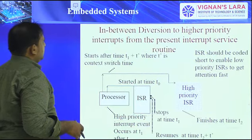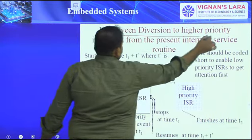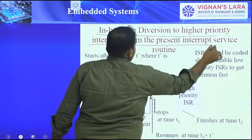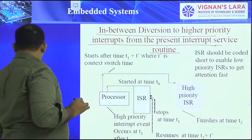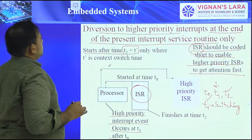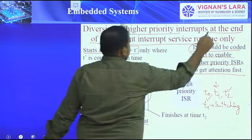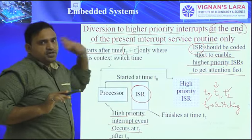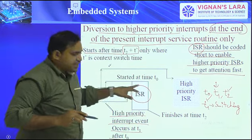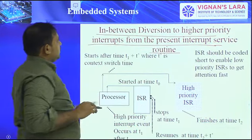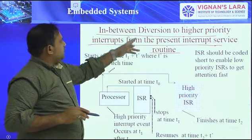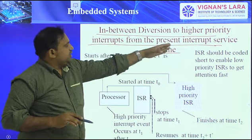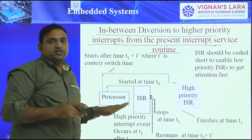The second figure shows diversion to higher priority interrupts from within the present interrupt service routine — not waiting until the end. Here, at T0 the process starts, and at T1 we get an interrupt. This is a non-maskable interrupt scenario.